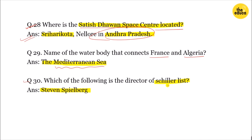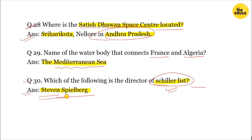The next question asks which of the following directors directed Schindler's List. The answer is Stephen Spielberg. The movie has a rating of 9, and Stephen Spielberg is the director.